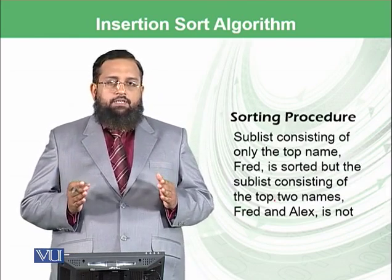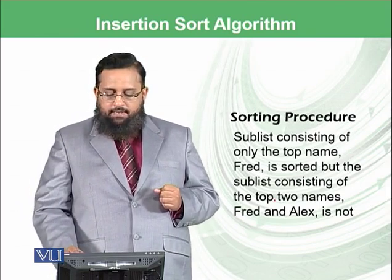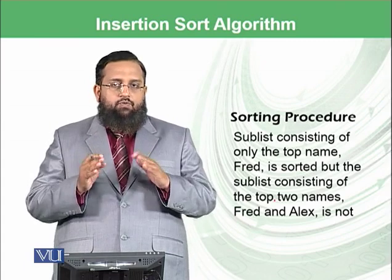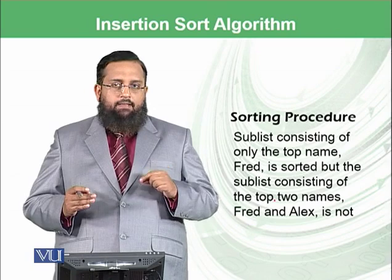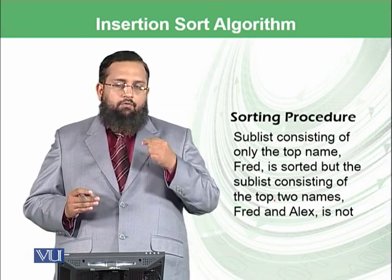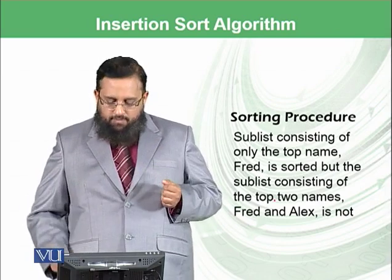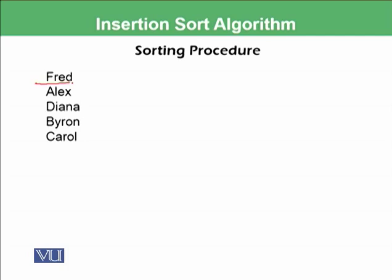What is the sorting procedure in insertion sort? We say that the sublist consisting of only the top name is already sorted, and the next sublist is unsorted. Then we pick the first element from the unsorted list and try to sort it between the first and second elements. At this point, we can say that Fred is sorted already, and the remaining list highlighted in the rectangle is unsorted.